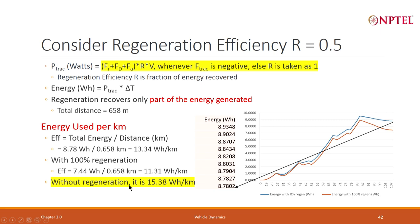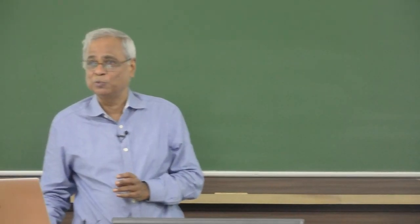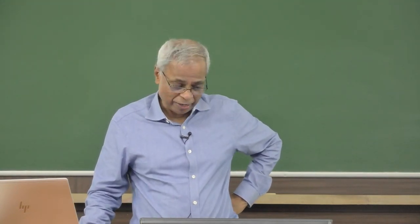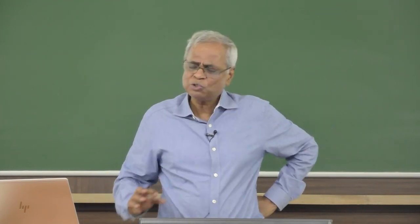If I assume no regeneration, the energy curve will not dip — it will be flat. The energy goes up to 15.38 watt-hours per kilometer. These numbers are very important. This is for a low-speed two-wheeler using the India Drive Cycle, with a vehicle weight of about 190 kg.